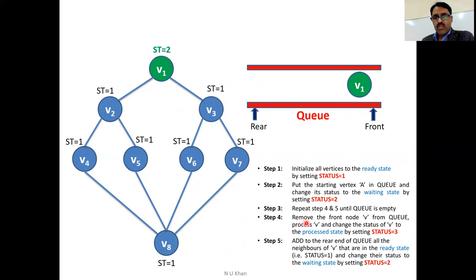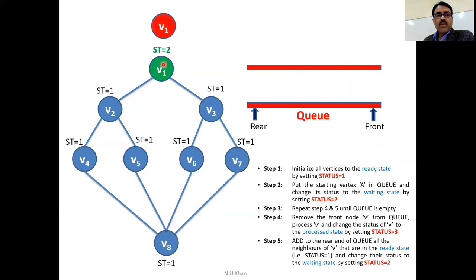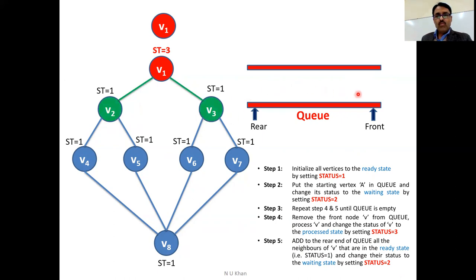Now check — is the queue empty or not? Right now the queue is not empty. In step four, remove the element from the queue from the front end, visit it, and set the flag value to 3. Now in step five, add to the rear end of the queue all the neighbors of V1. V1 has two neighbors: V2 and V3. We set their flag values to 2.